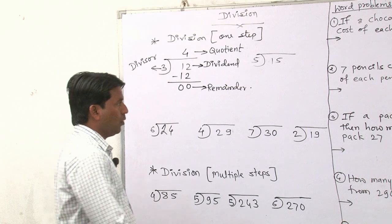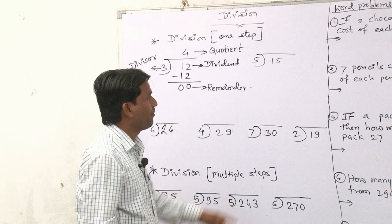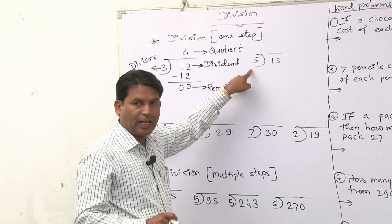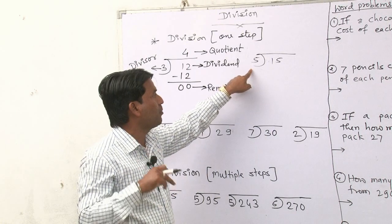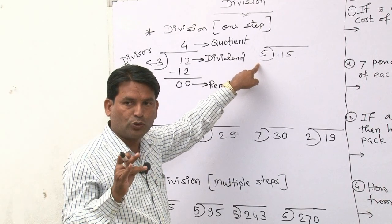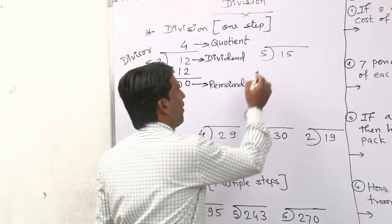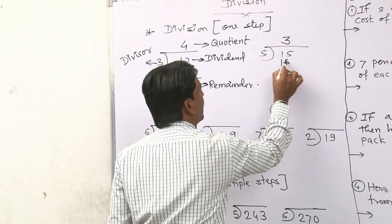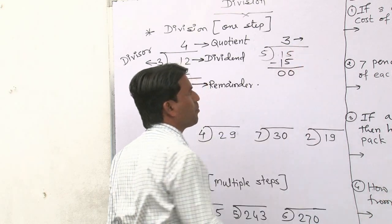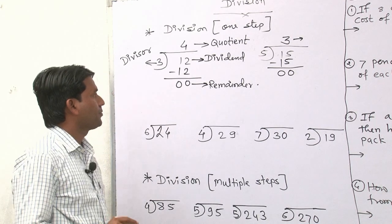Next example: 15 divided by 5. We have to divide 15 by 5. We count the 5 times table to see when we reach 15: 5 ones are 5, 5 twos are 10, 5 threes are 15. So counting the 5 table up to 3 gives us 15. This will be your answer.